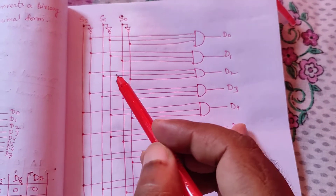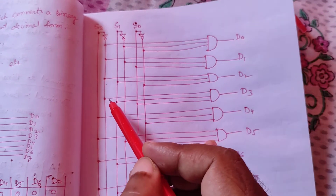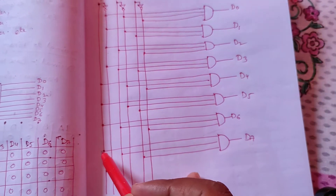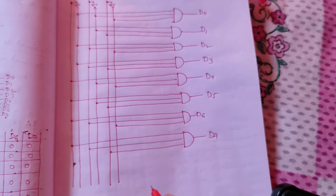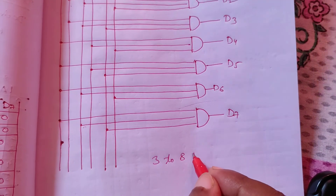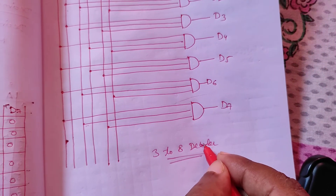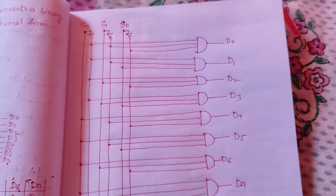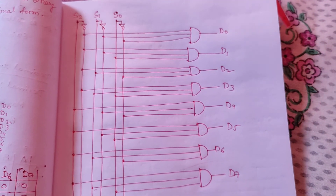Similarly, D2 is 0 1 0, D3 is 0 1 1, and so on up to D7 which is 1 1 1. We make all outputs the same way. This completes the 3-to-8 decoder. Similarly, we can make a 2-to-4 decoder or a 4-to-16 decoder.